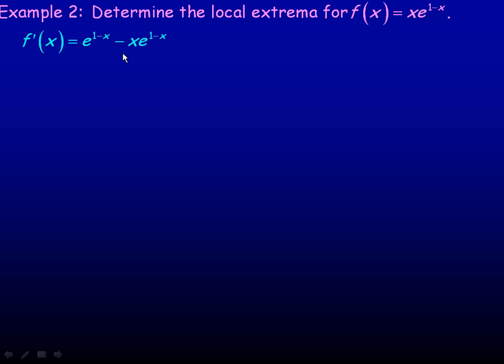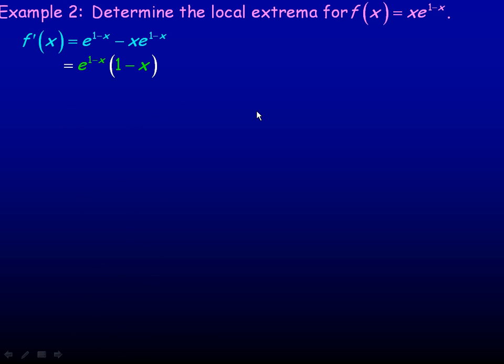We are going to set that first derivative equal to 0 to find where any local minimum or maximum could occur. But in order to set it equal to 0, it would be good to have it in factored form first.